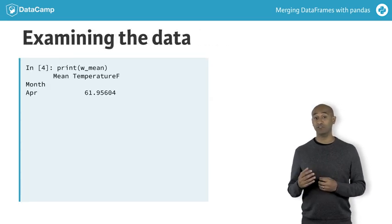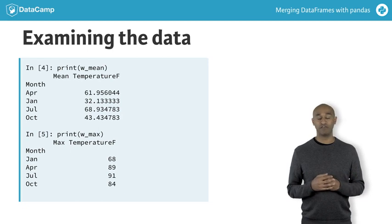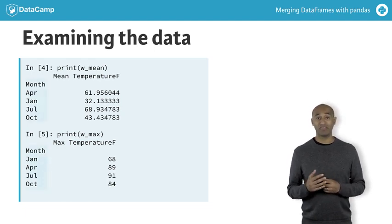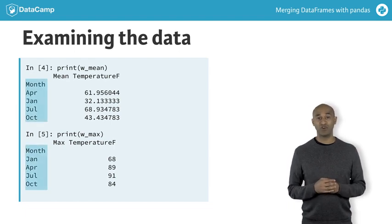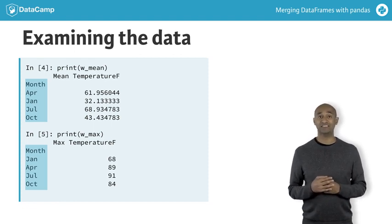We can examine our data frames W_mean and W_max more closely. The mean_temperature_F and max_temperature_F columns are, respectively, the average and maximum daily temperatures in Fahrenheit observed during three-month intervals or quarters. For both data frames, the column month is the data frame index — the first month of each quarter. By virtue of how the CSV files are sorted, the index of W_mean is in alphabetical order, while the index of W_max is in chronological order.